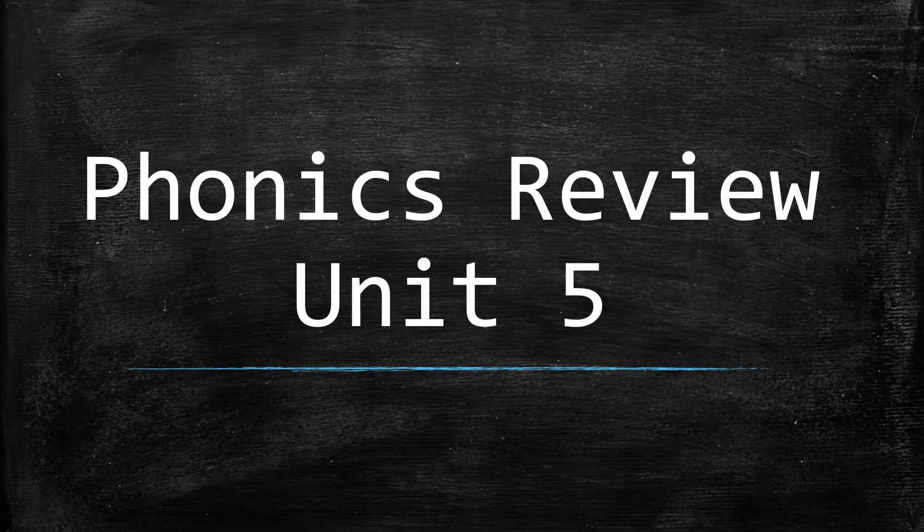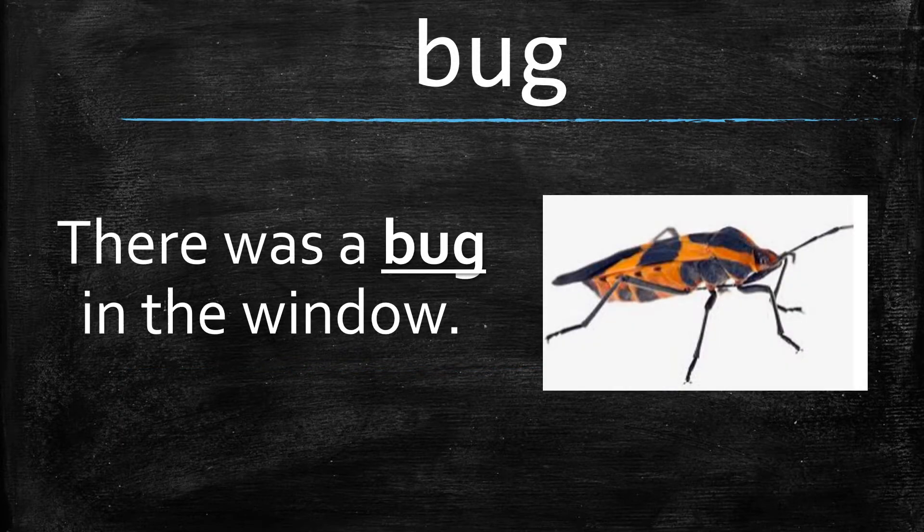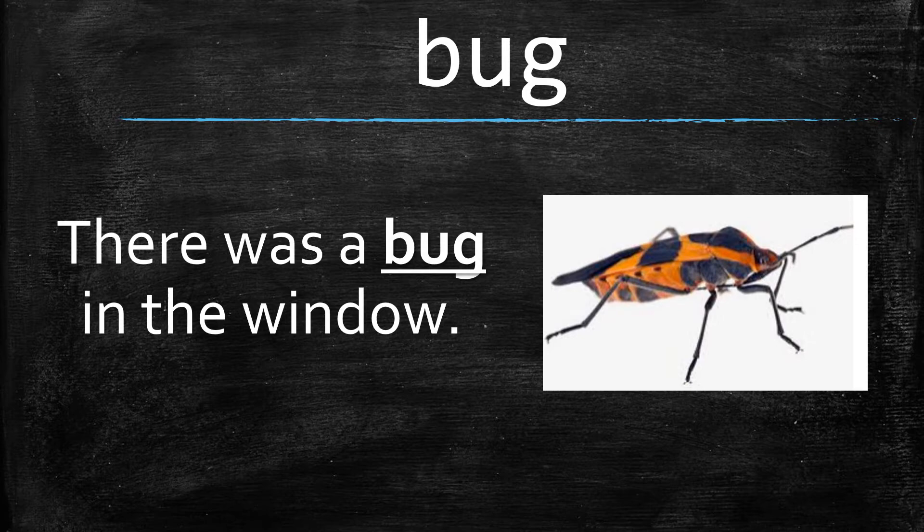Boys and girls, this is Phonics Review Unit 5. The first word is bug, B-U-G. There was a bug in the window.